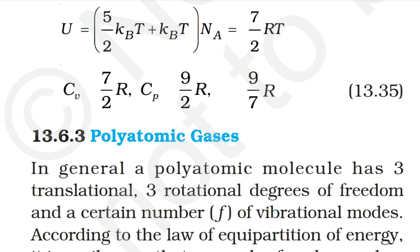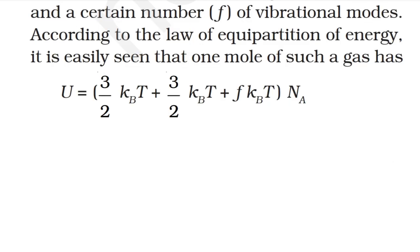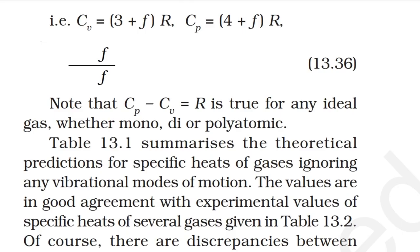Polyatomic gas: in general, a polyatomic molecule has three translational and three rotational degrees of freedom, plus f vibrational modes. By the law of equipartition of energy, one mole has U = [(3/2) + (3/2) + f]kBT·NA. This gives γ = (4 + f)/(3 + f), CV = (3 + f)R, and CP = (4 + f)R. Note that CP − CV = R holds for any ideal gas, whether mono-, di-, or polyatomic. Table 13.1 summarizes the theoretical predictions for specific heats.